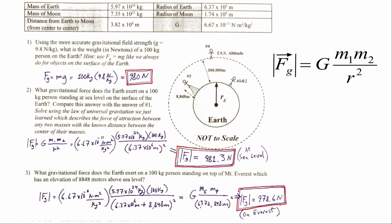We can solve for this same gravitational attraction using Newton's universal law of gravitation. We plug in the mass of the Earth — that's m1, 5.97 times 10 to the 24th kilograms — times the mass of the person, 100 kilograms, divided by the distance squared. The distance from the center of the Earth to the person is essentially just the radius of the Earth, 6.37 times 10 to the 6 meters, and we have to square that. Plugging those values in gives a force of about 981.3 Newtons at sea level.